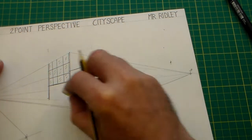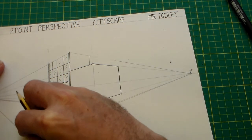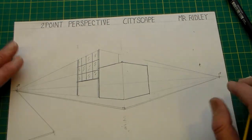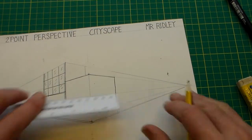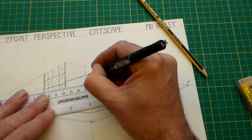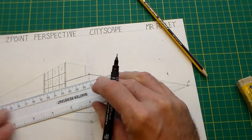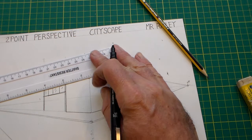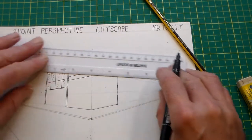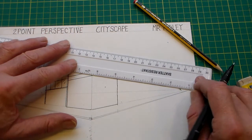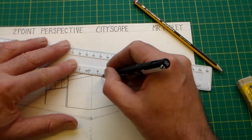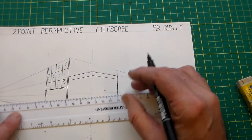You'll find that as you're working, if you erase these construction lines it will look much cleaner. I'm going to add a top detail to this building here — you could even create a high street or a road near you.